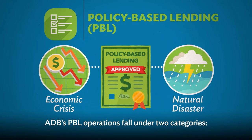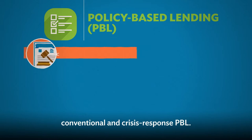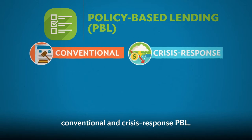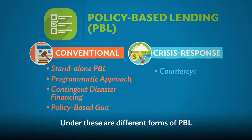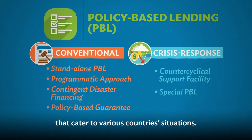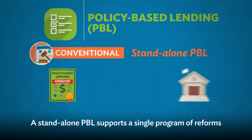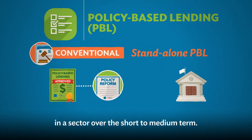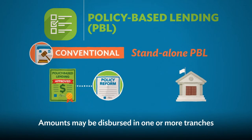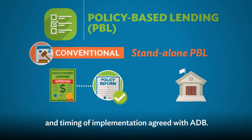ADB's PBL operations fall under two categories: Conventional and Crisis Response PBL. Under these are different forms of PBL that cater to various country situations. A standalone PBL supports a single program of reforms in a sector over the short to medium term. Amounts may be disbursed in one or more tranches depending on the policy actions and timing of implementation agreed with ADB.